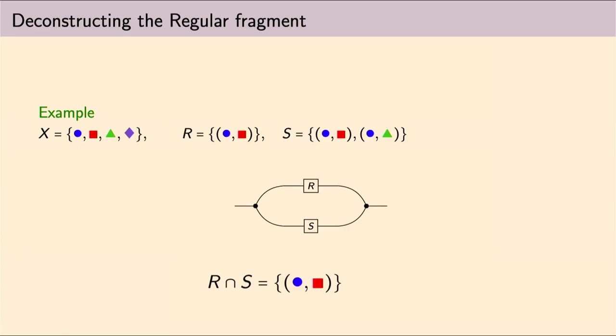So, why did we deconstruct the regular fragment? We took basic operations in the calculus of relations, which is the conjunction, and we indeed deconstructed it into three different parts. One is the monoidal product of R and S, and the other ones are this pre-composition and post-composition with this duplicator and co-duplicator.